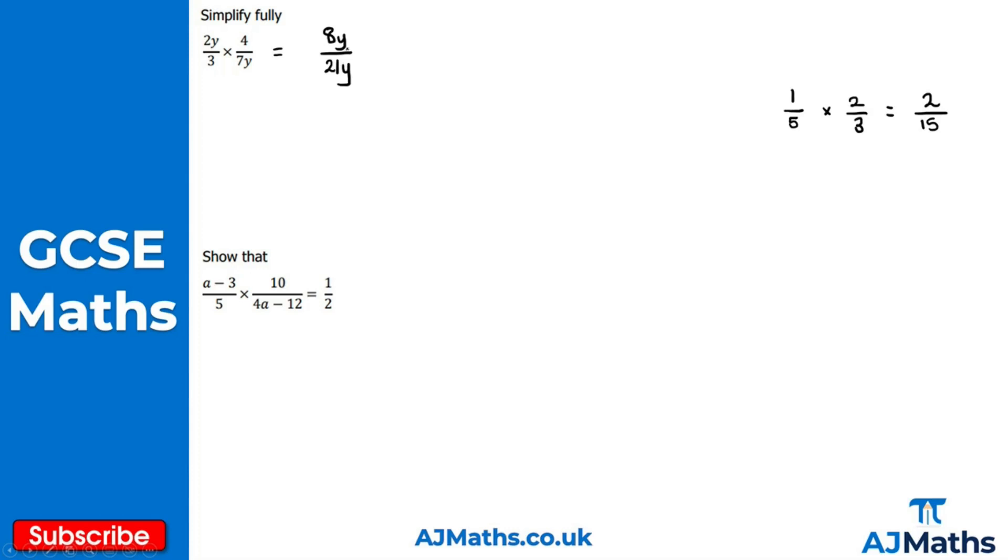Be careful here - we need to give the answer in its simplest form. 8y/21y isn't simplified yet because we can cancel y in both the numerator and denominator. This leaves us with 8/21, which is our solution in simplest form for the first question.